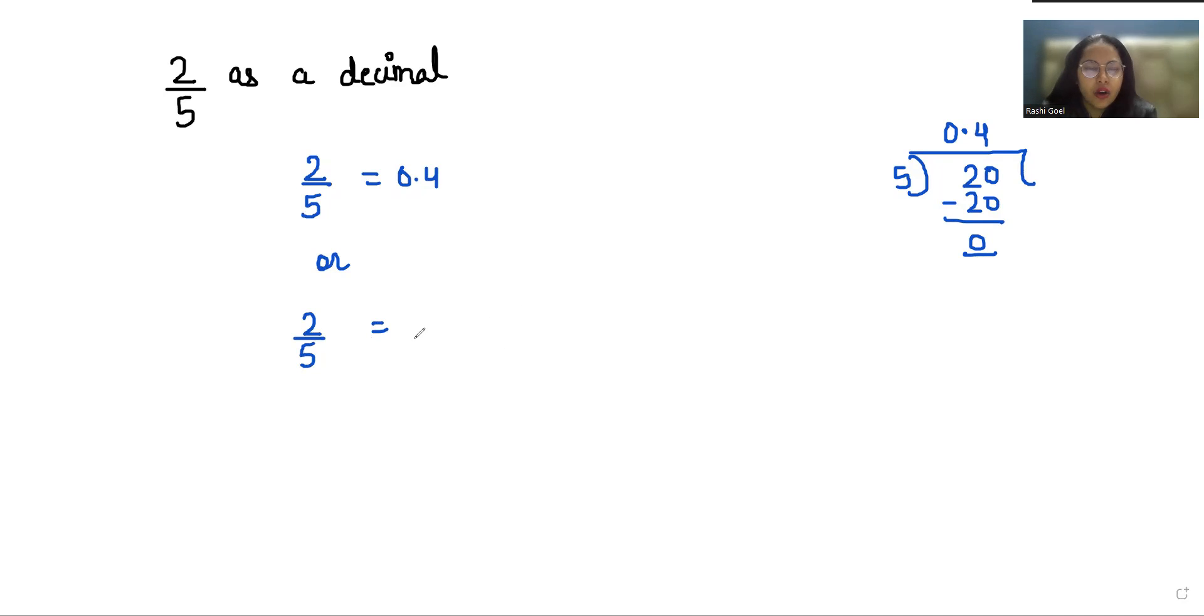1000. Now in table of 5 we know that 10 comes. So we'll write denominator 10, and now check how many times the 10 comes. It comes at 2 times, so we'll multiply numerator as well as denominator with 2.